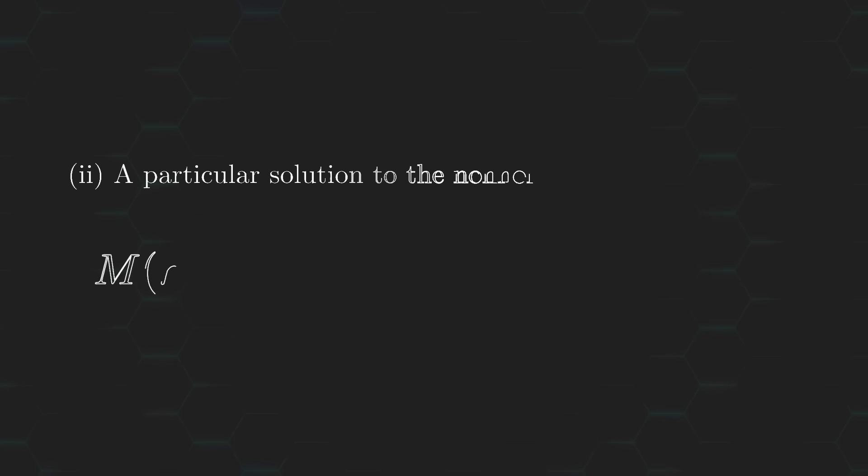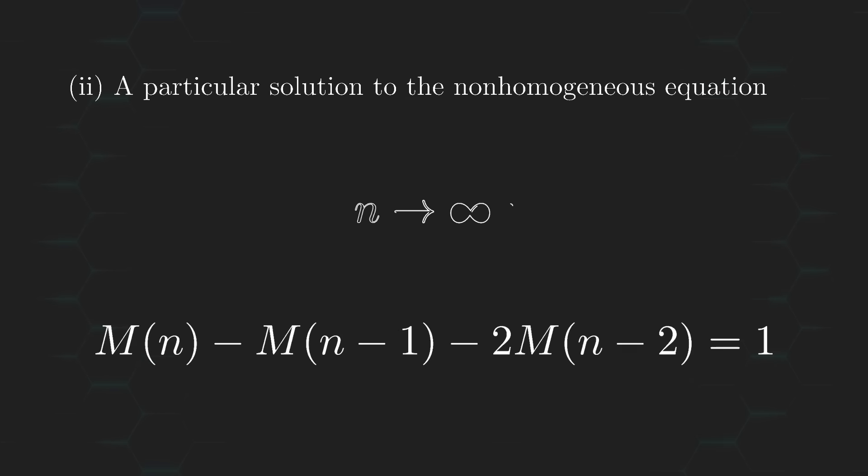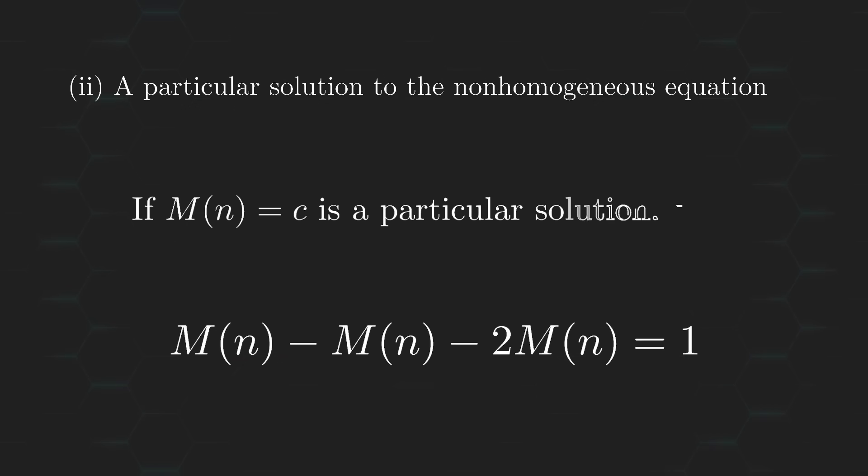Okay, next we want to find a particular solution to the non-homogeneous equation. First of all, notice that as n approaches infinity, the difference between the values n, n-1, and n-2 becomes negligible, and so they all converge to be equal to one another. So, if we assume that some constant c is a particular solution to the non-homogeneous equation, then c must also satisfy the following equation, which we can easily solve.